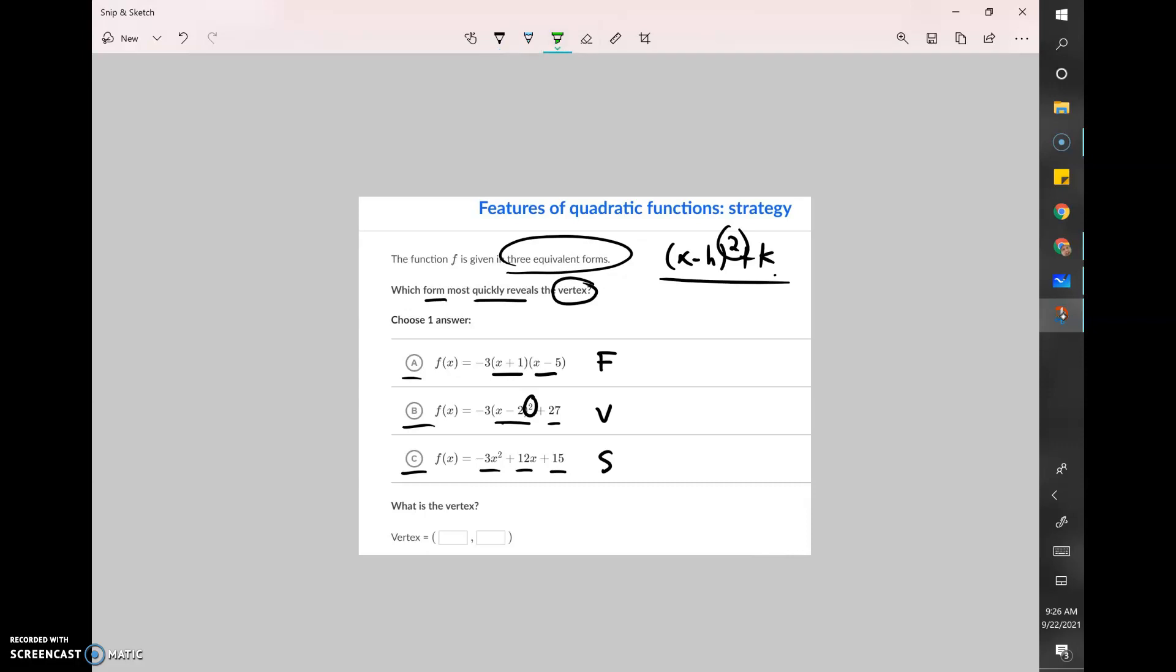We're going to select B because that's the one that's in vertex form. And then we got to put the vertex, and it can kind of be tricky here because the x value is always the opposite of what you think it should be. We got a minus two there but the vertex form has a negative, so h is actually a positive two. And then the k value is the constant, the number that's being added or subtracted. It's a positive k so we're going to leave it as a positive 27.